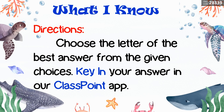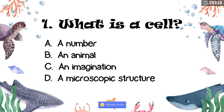Number one: What is a cell? A. A number. B. An animal. C. An imagination. D. A microscopic structure. That is correct — it is letter D, a microscopic structure.